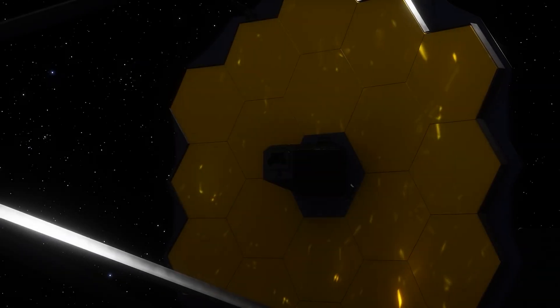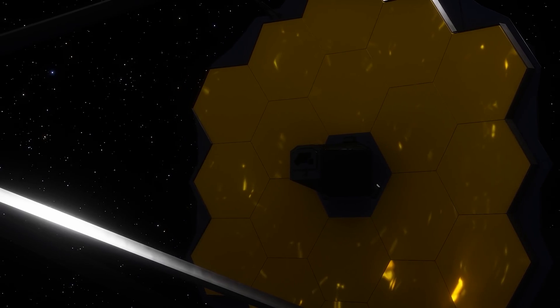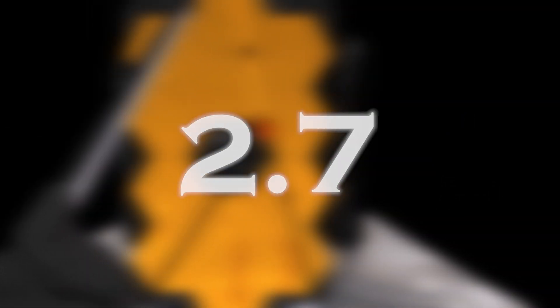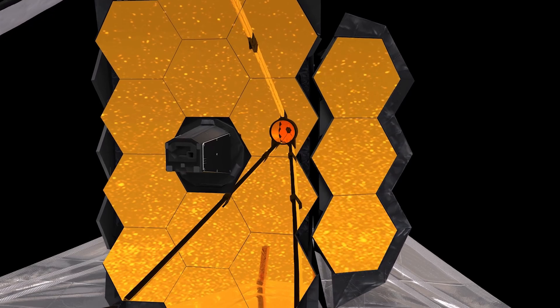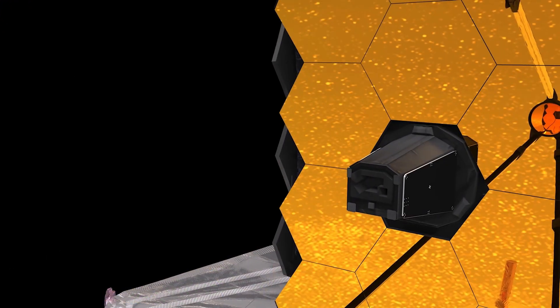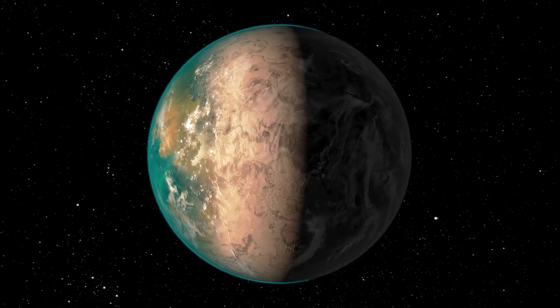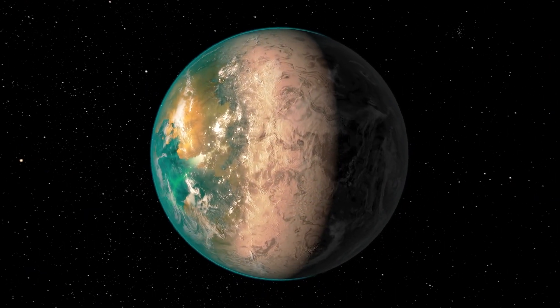Its 6.5-meter primary mirror is 2.7 times larger than Hubble's. Imagine it can detect even the faintest flicker of a star billions of light years away and then analyze the details of orbiting planets.